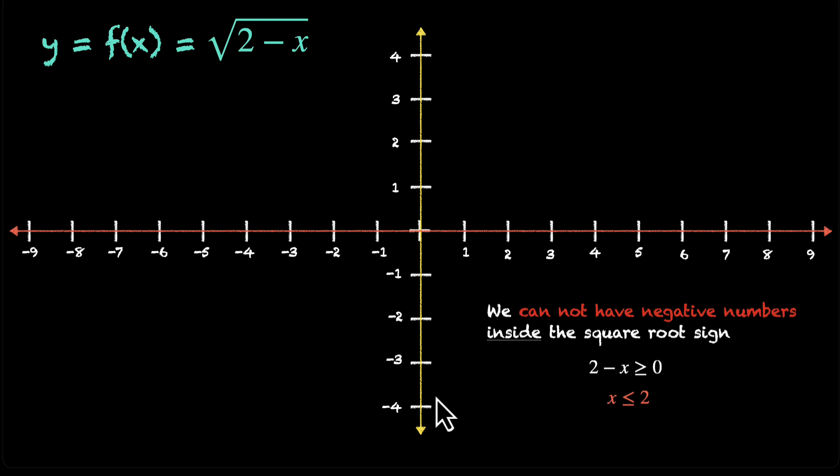So when we're trying to plug in values, we will not take any value of x that is more than 2. There's no point, because if we do that, we'll have something negative inside the square root, which will not work. So now let's draw a table. We have x, y, let's put in some values.